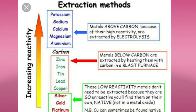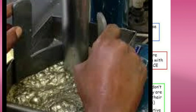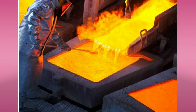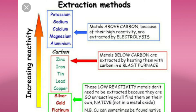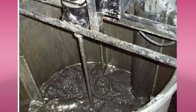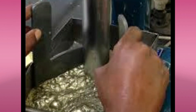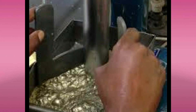Copper and mercury are extracted by burning directly in air. Silver and gold are unreactive metals that do not need chemical extraction — they can be extracted directly by physical methods.